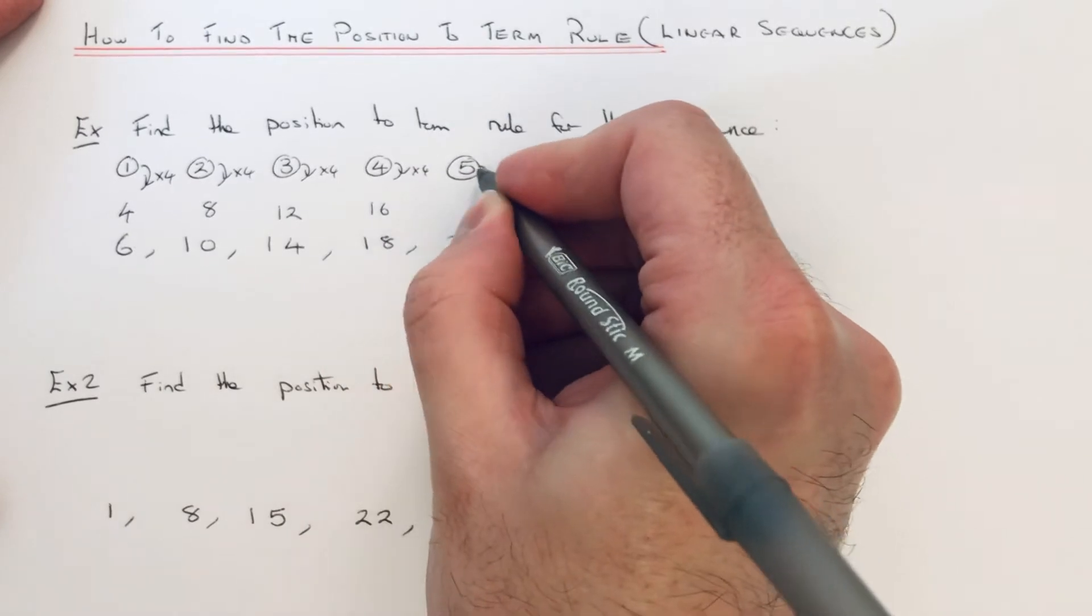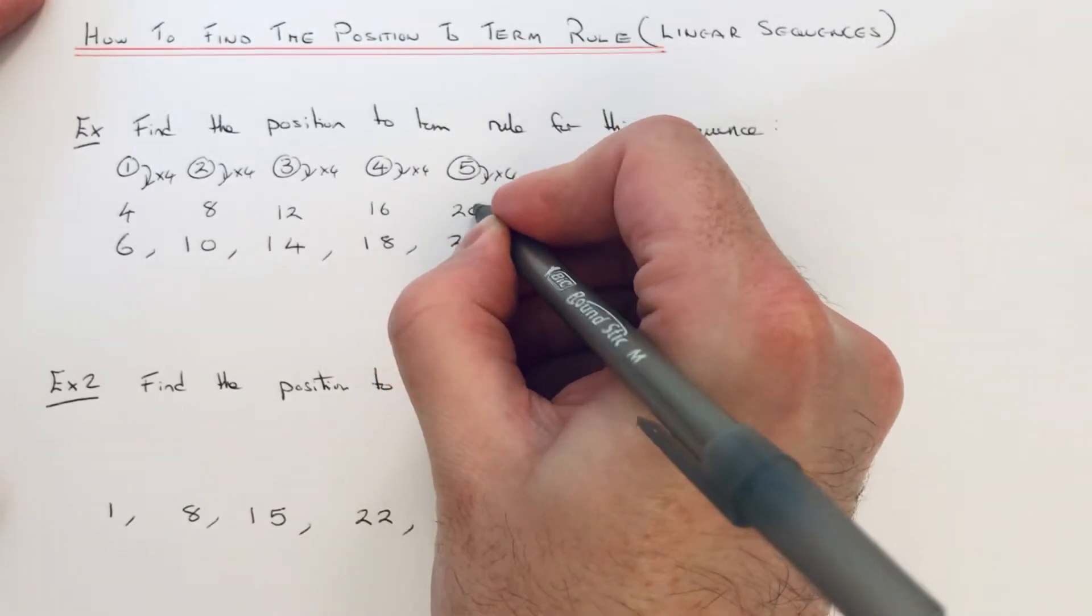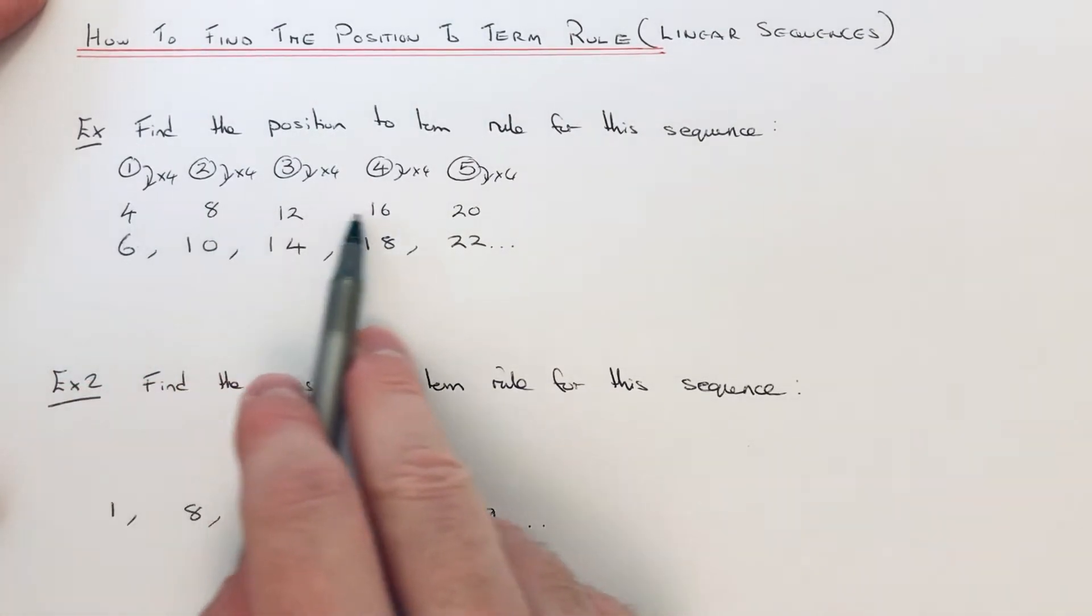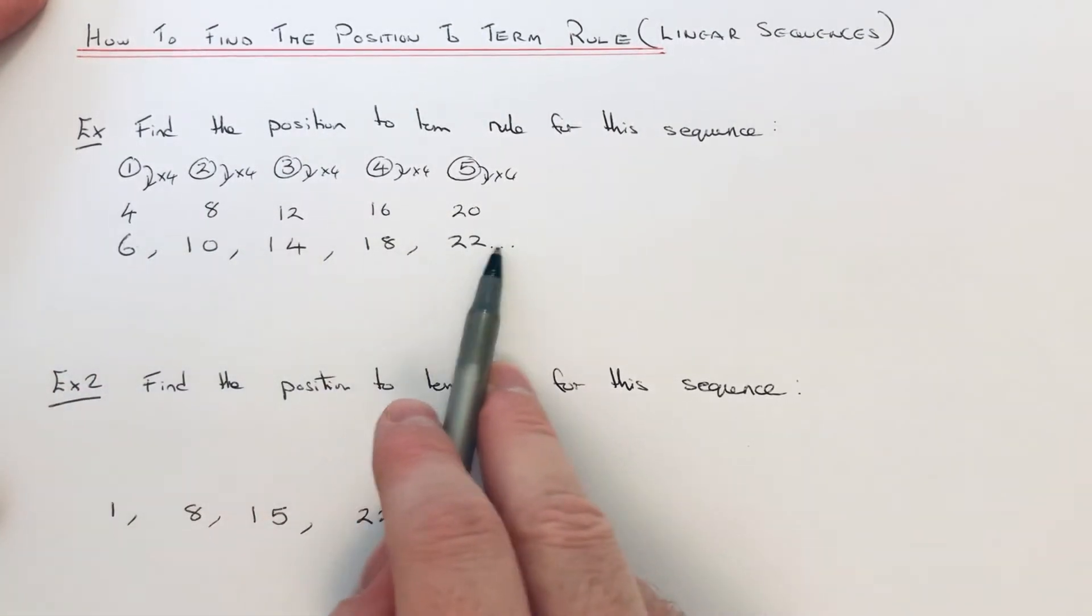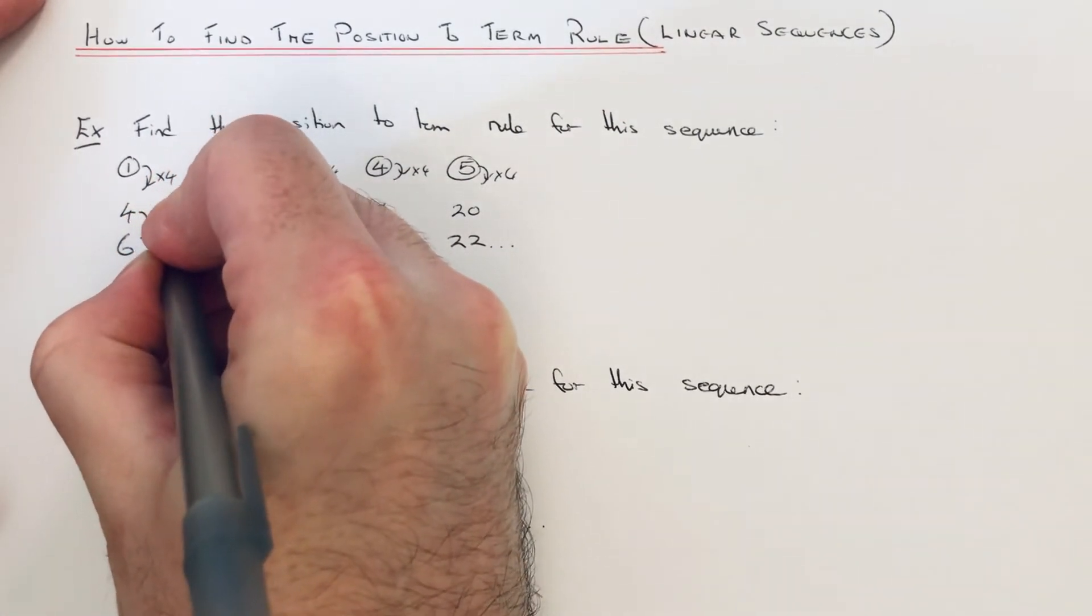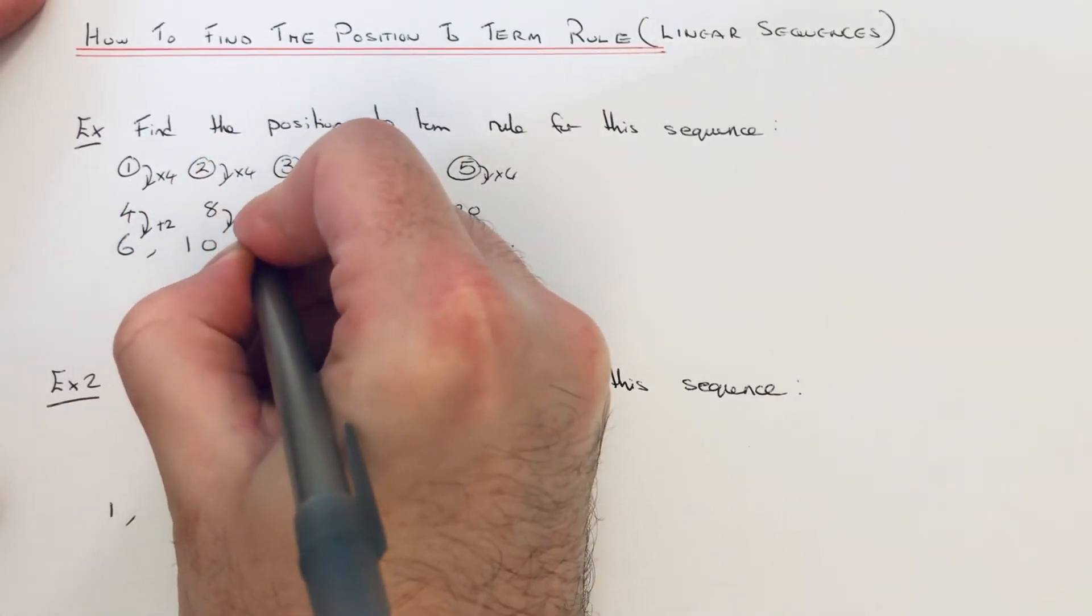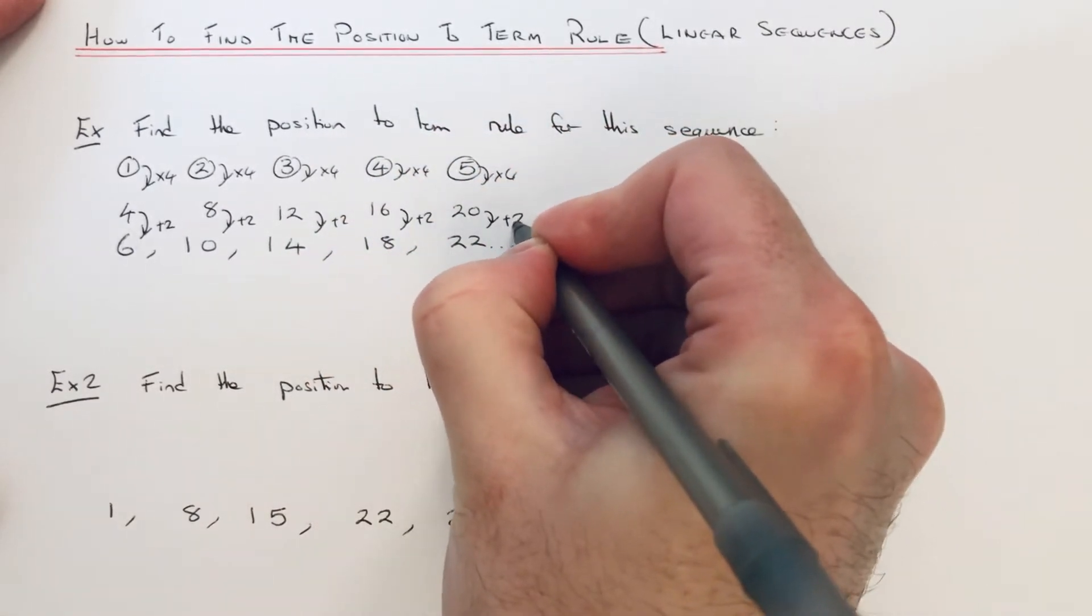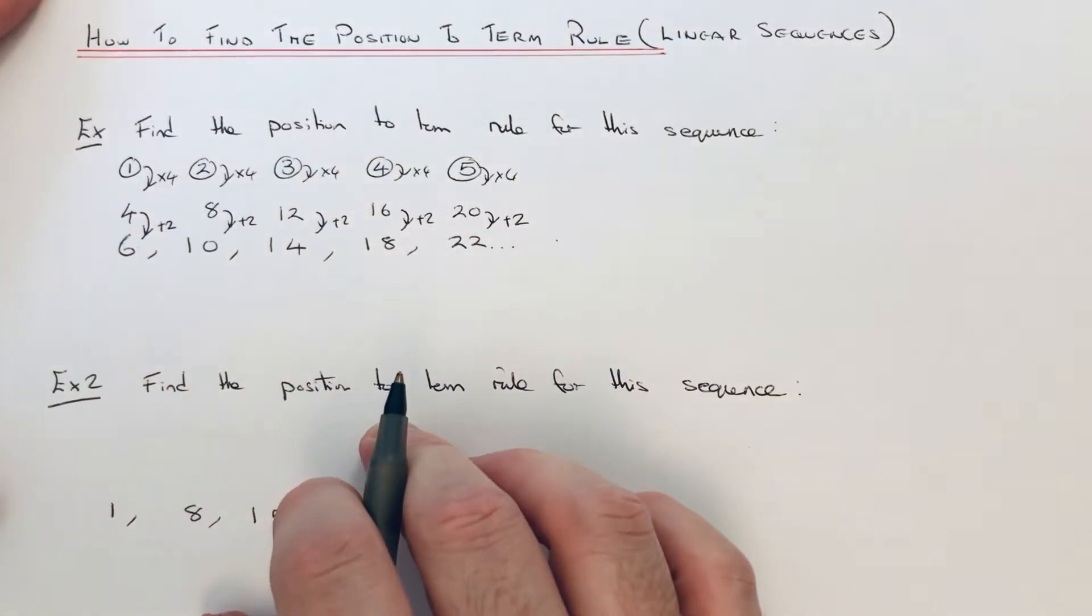Then we just need to work out what we did to these four times tables to give us the numbers in our sequence. It's looking like you have to add 2 to get the number in the sequence, and you see it works for each one.